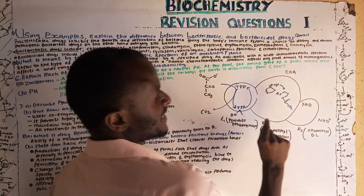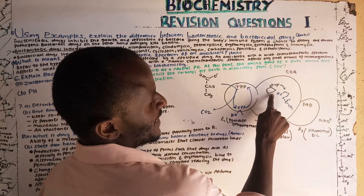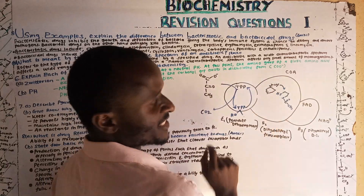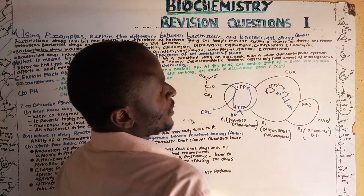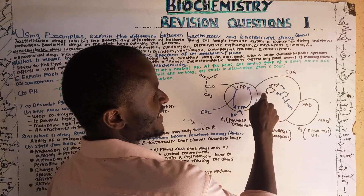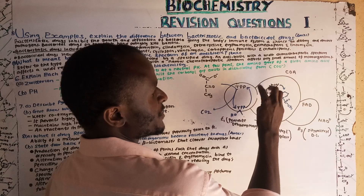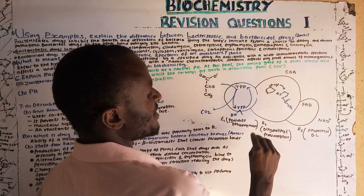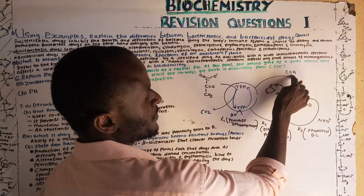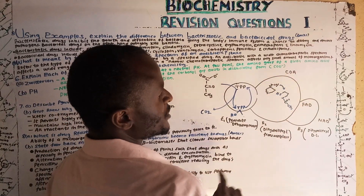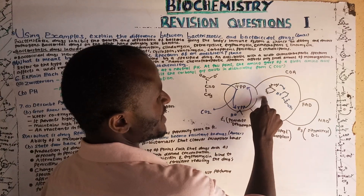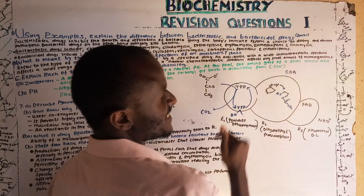The most important part of lipoic acid is the disulfide bond, which helps in the transfer of the acetate group from this compound onto coenzyme A to form acetyl-CoA. When the disulfide bonds are broken, they yield energy that drives the forward reaction.